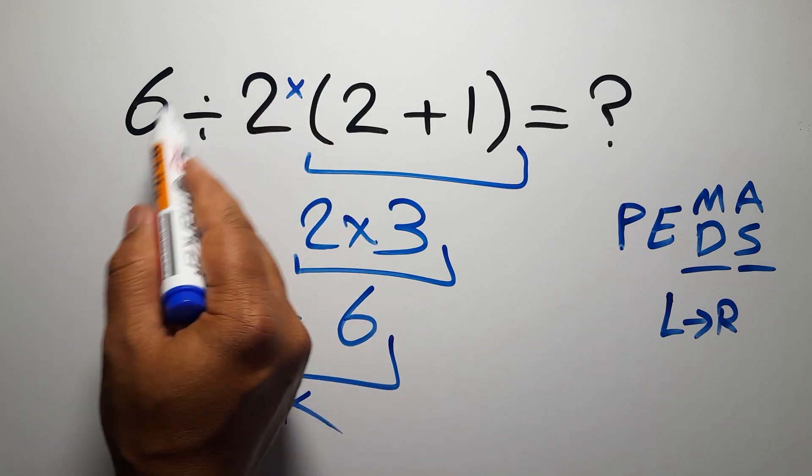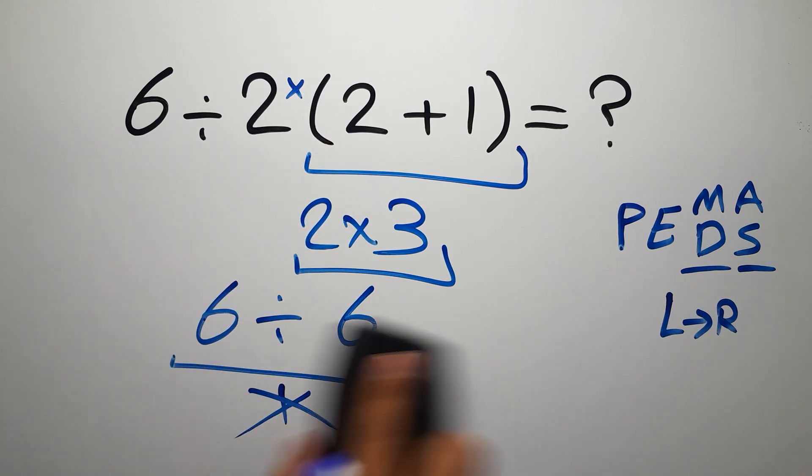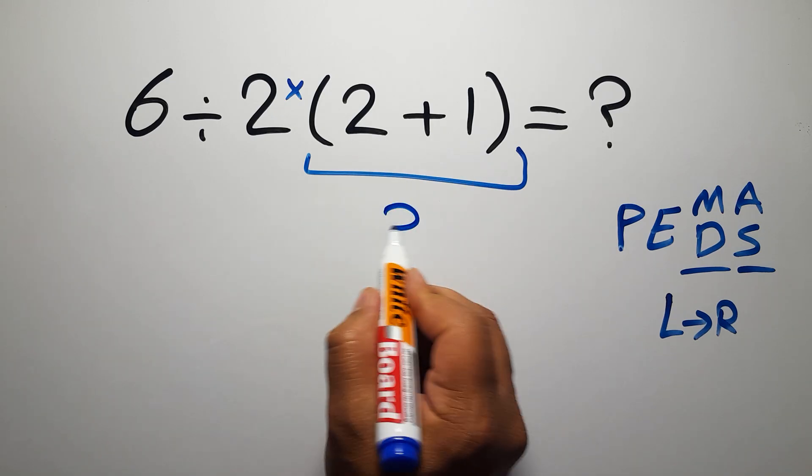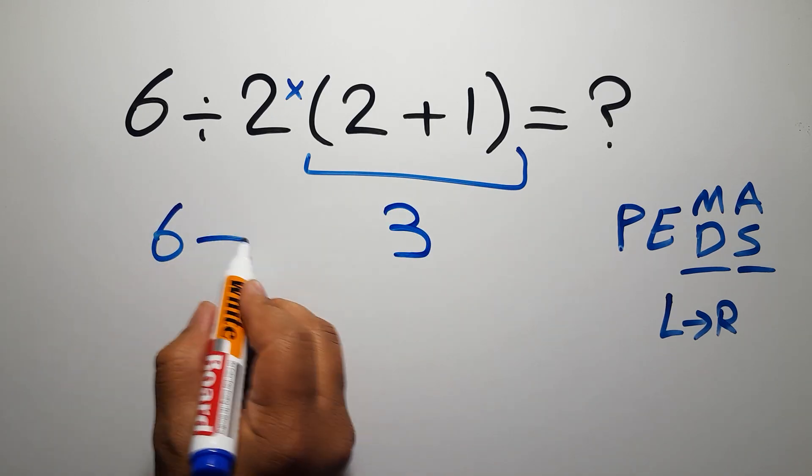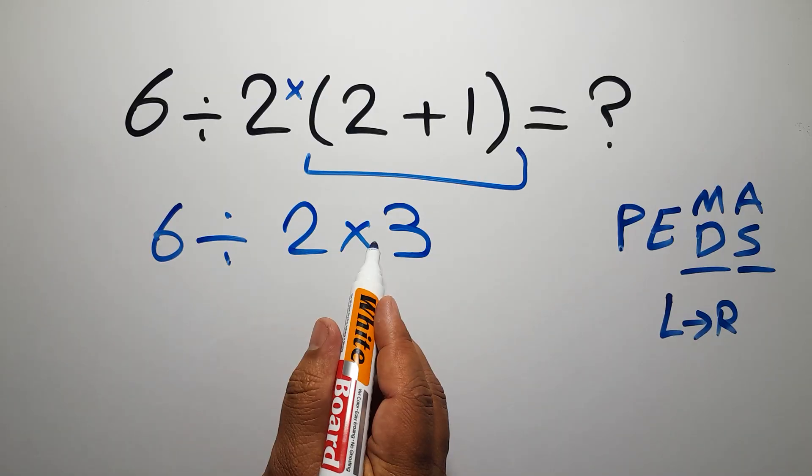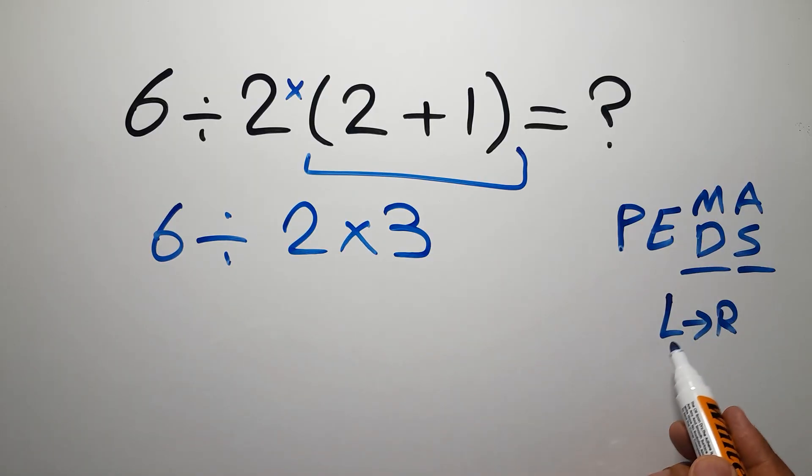Inside these parentheses we have 2 plus 1, which equals 3. So 6 divided by 2, then times 3. Multiplication and division have equal priority and we have to go from left to right. So first, 6 divided by 2, which equals 3.